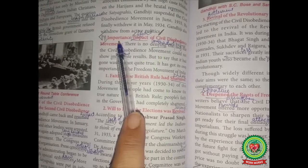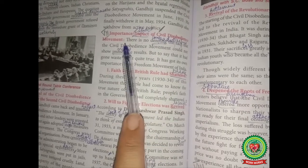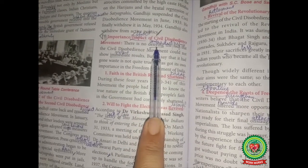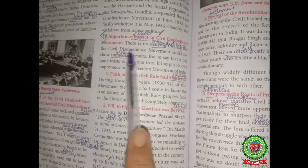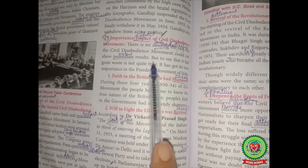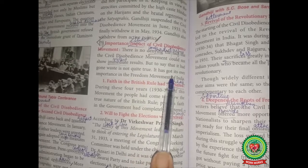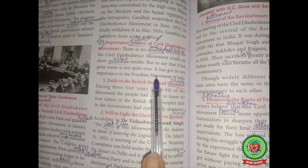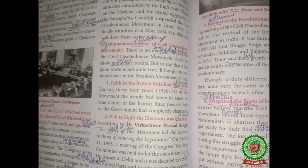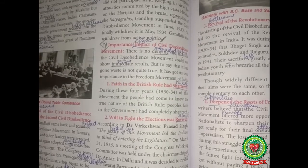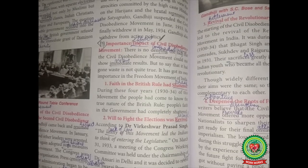Open your books. Topic: Importance and Impact — that is, the effect — of the Civil Disobedience Movement. There is no denying the fact that the Civil Disobedience Movement could not show immediate, that is instant, results. But to say that it had gone to waste is not quite true. It has its own importance in the freedom movement of India.